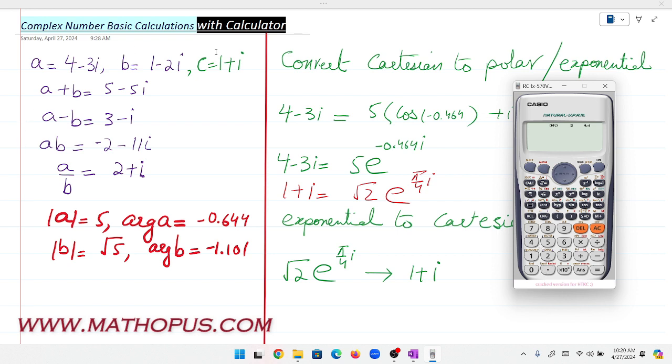We're going to store these complex numbers in fixed memory. Let's focus on the first complex number, which is 4-3i. Enter 4 minus 3, then press the ENG button for i.